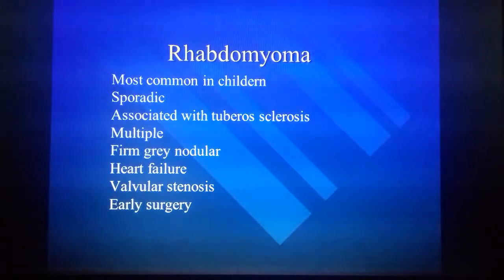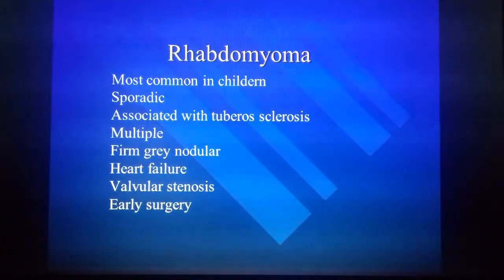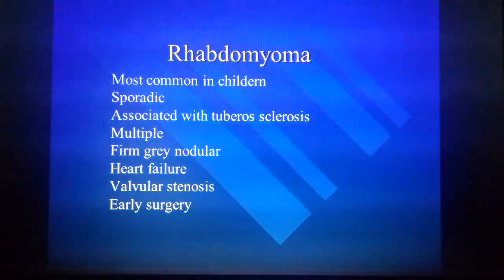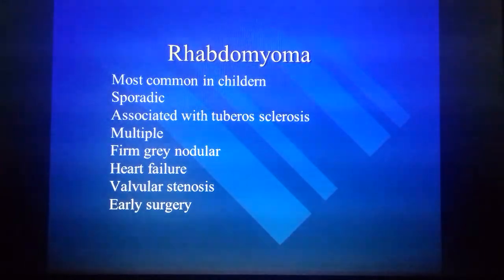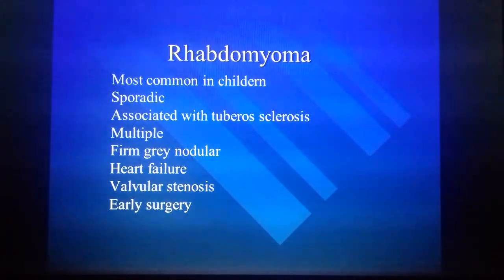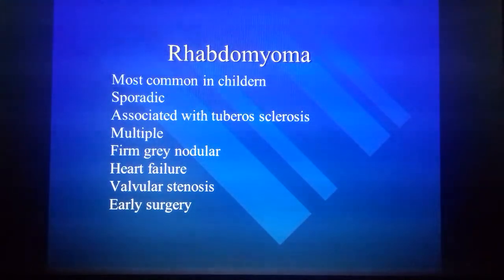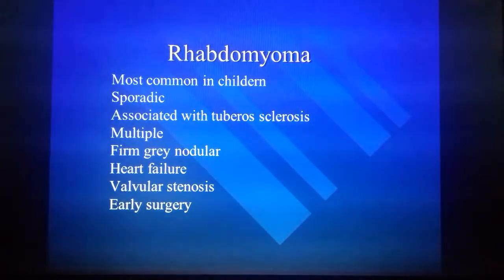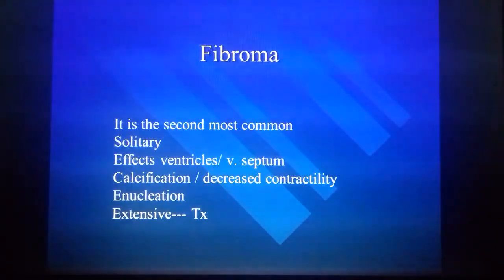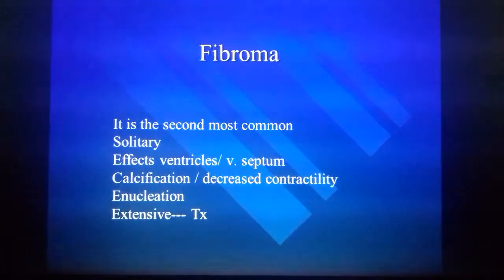Rhabdomyoma is the most common cardiac tumor in children. It could be sporadic or associated with tuberous sclerosis. They are multiple, firm, gray, and nodular in appearance. They can be associated with heart failure and valvular stenosis, and may require early surgery.